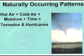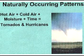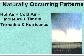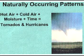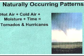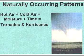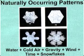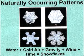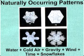In the case of tornadoes and hurricanes, if you take hot air, cold air, moisture, and time and put things together in just the right amounts, you will get a tornado, you will get a hurricane. Nobody has to design it. Similarly, snowflakes — water, cold air, gravity, wind, and time — if the conditions are right, you'll get snowflakes. Snowflakes don't have to be designed by anyone.